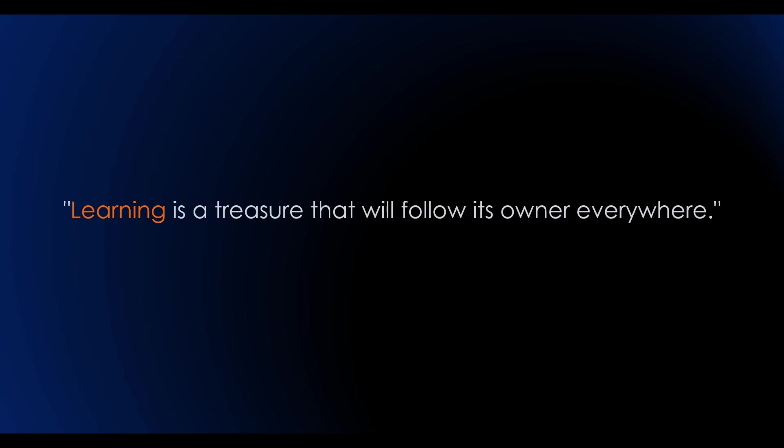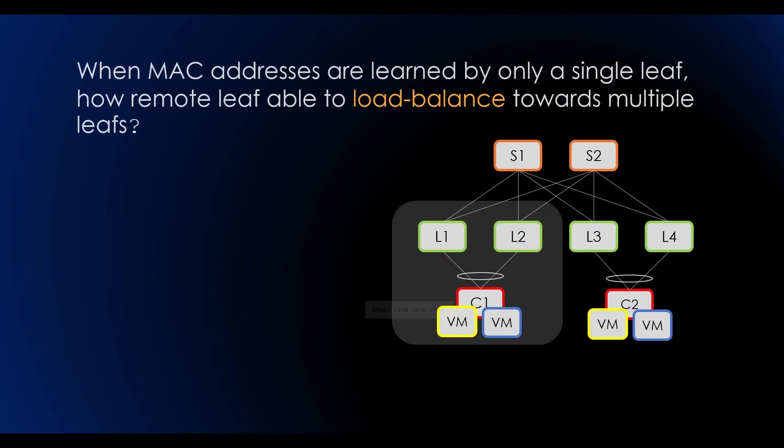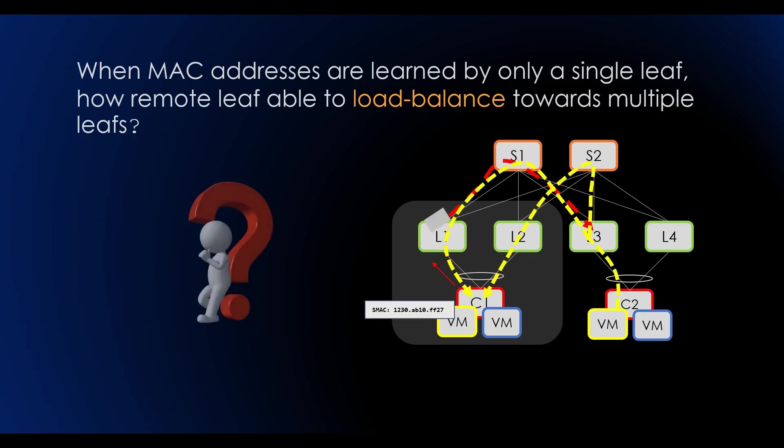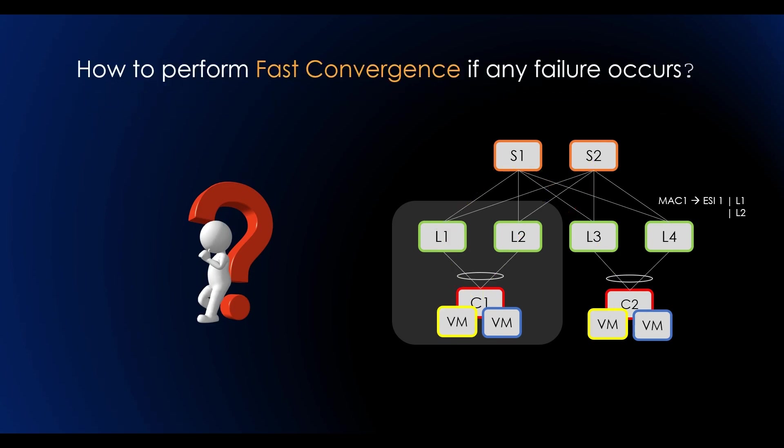Learning is a treasure that will follow its owner everywhere. How EVPN accommodate certain features when MAC addresses are learned by a single leaf. How remote be able to load balance toward the multiple leaves. How to perform fast convergence if any failure occurs.